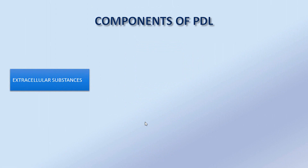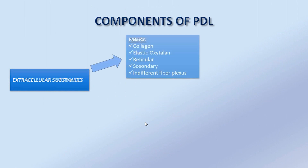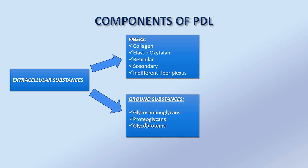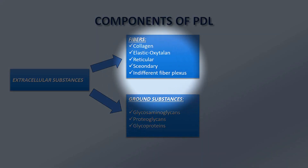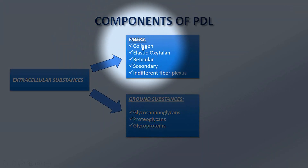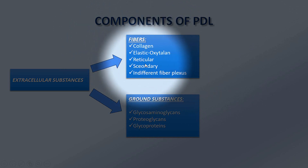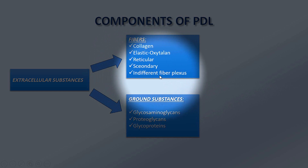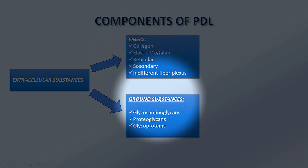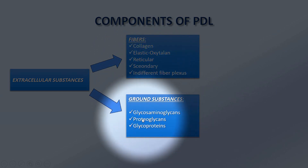Extracellular substances are composed of fibers and ground substances. The fibers include collagen, elastic oxytalan, reticular, secondary, and indifferent fiber plexus. Ground substances are composed of glycosaminoglycans, proteoglycans, and glycoproteins.